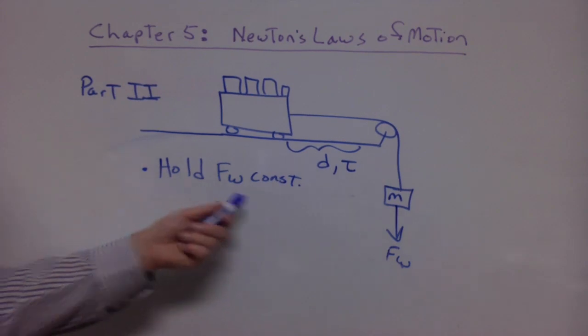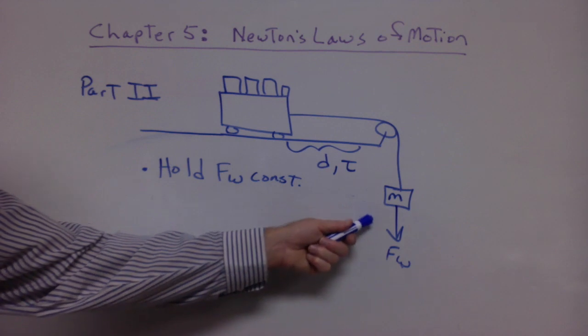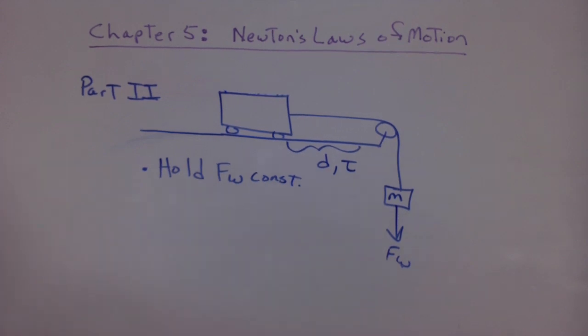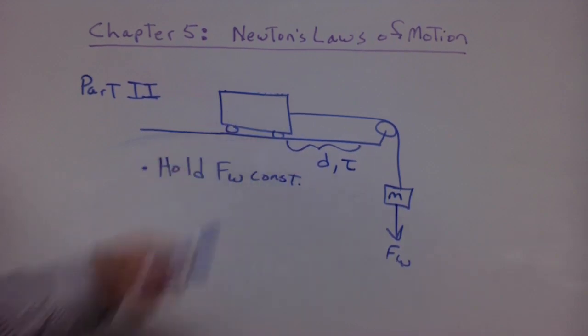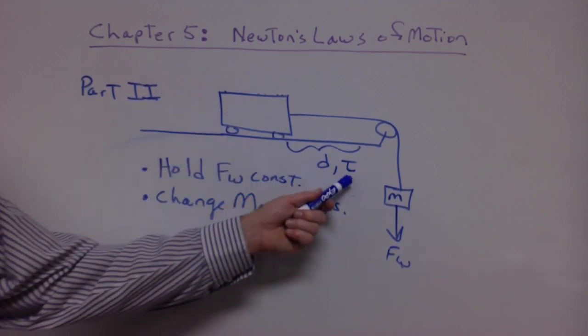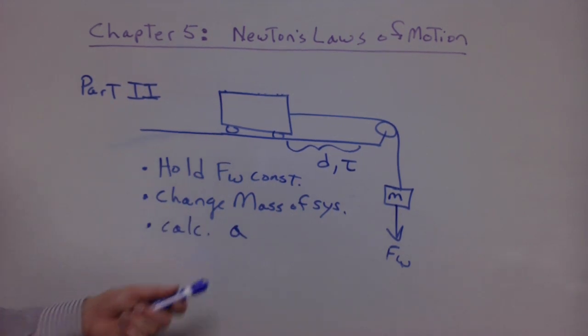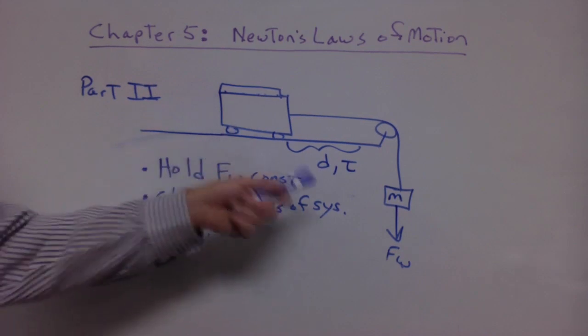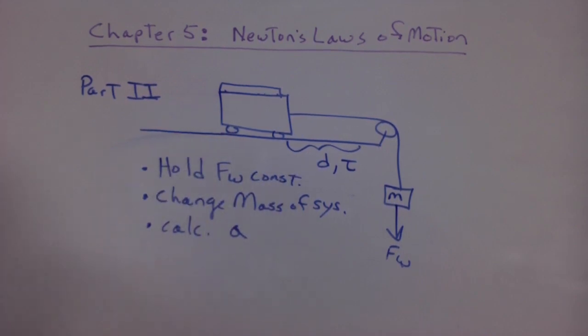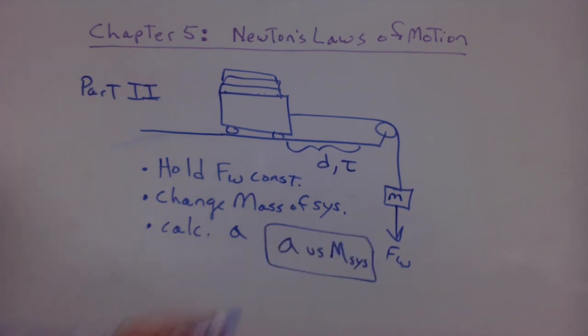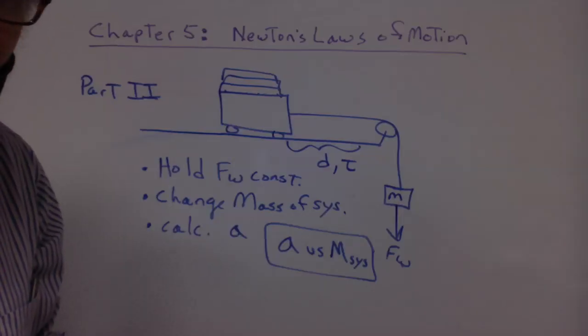Now for part two, we want to hold the Fw constant. We're not going to change that. We're going to keep that the same. And we're going to change the mass of the system. Again, we measure D, we measure T. You calculate the acceleration. We do it again by adding a mass. We doubled the mass of the system. Calculate A. Then we tripled the mass of the system. Calculate A. We quadrupled the mass of the system. Calculate A. Can you make a graph of acceleration versus the mass of the system? Holding a force constant that accelerates the system. Is there a relationship here? You do all that math and then we'll talk about it.